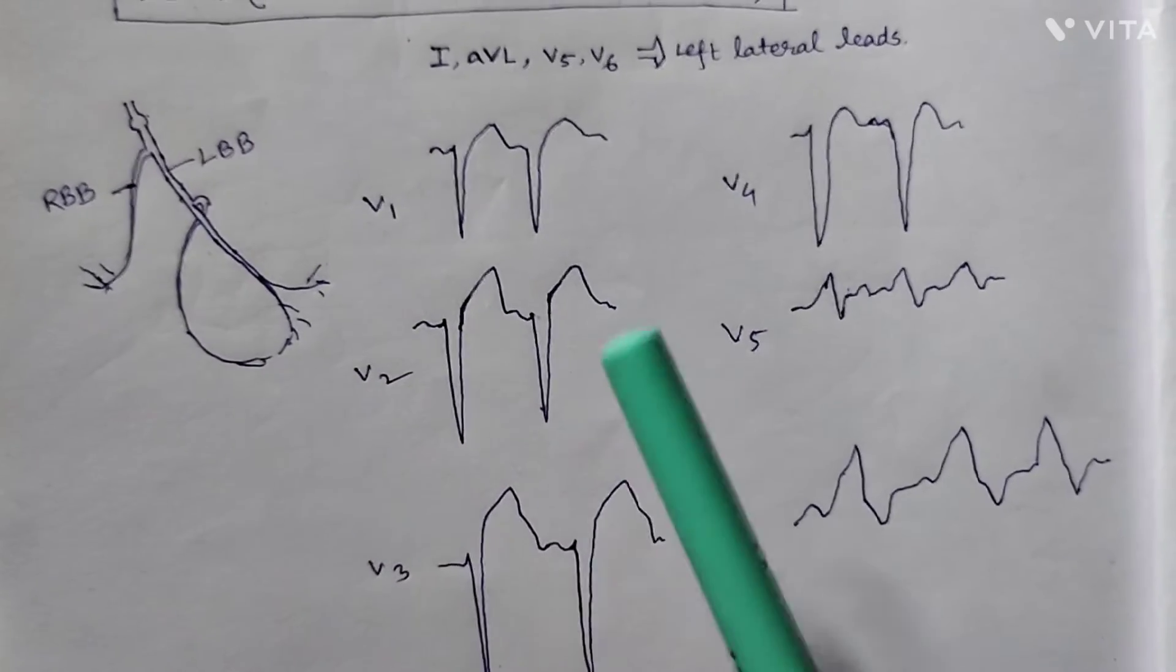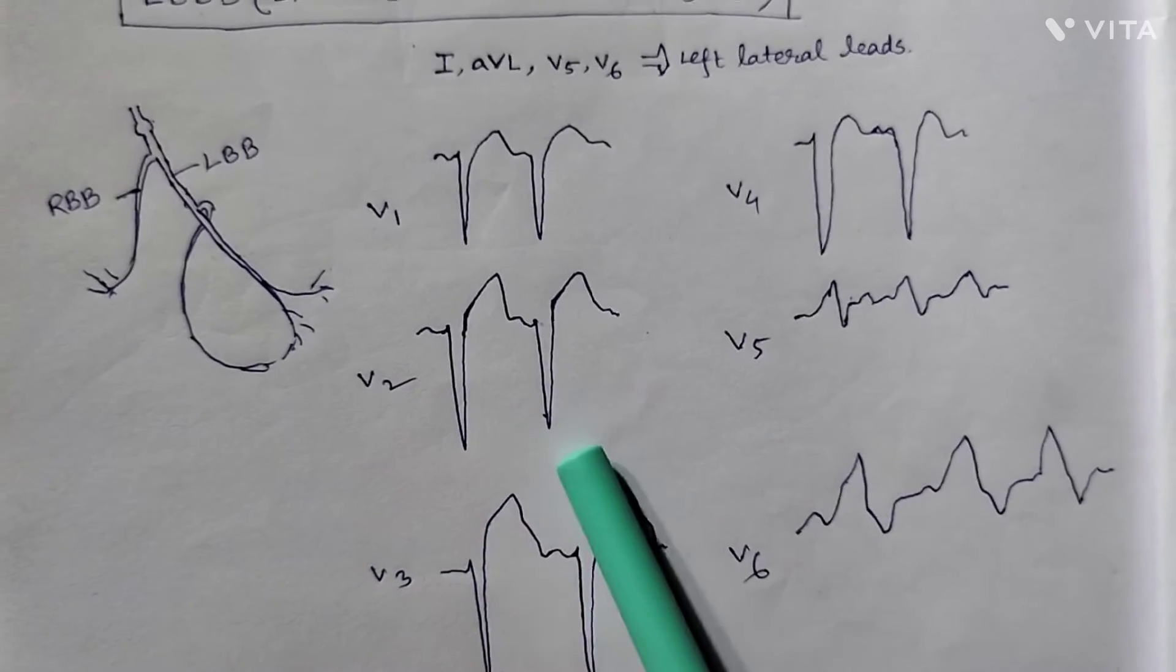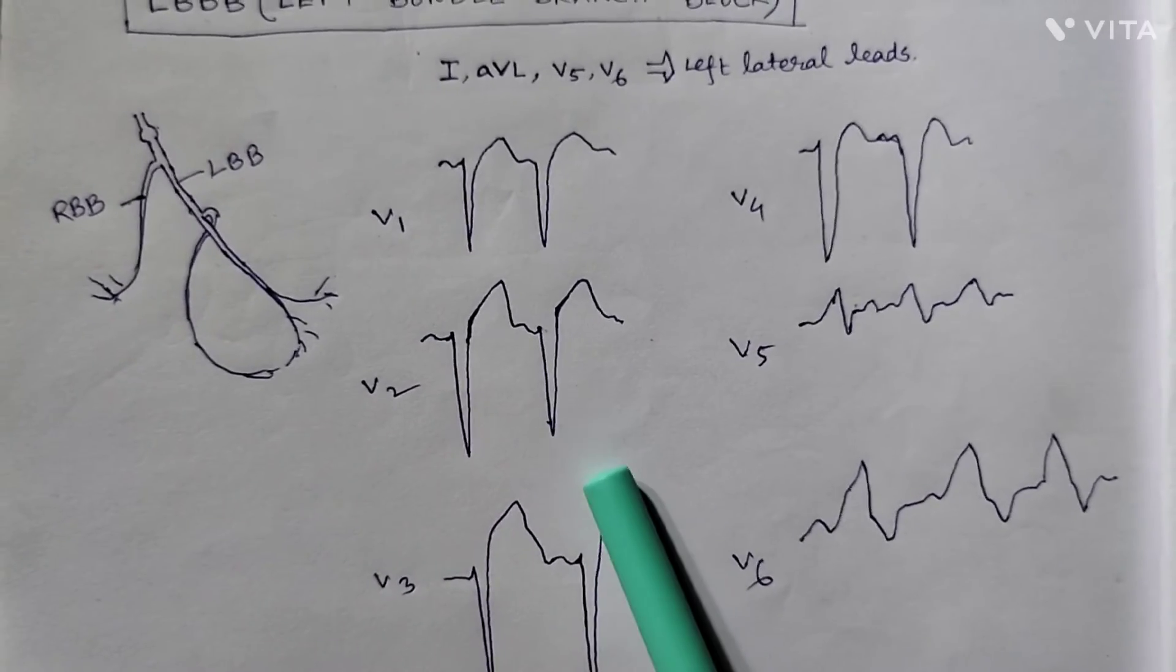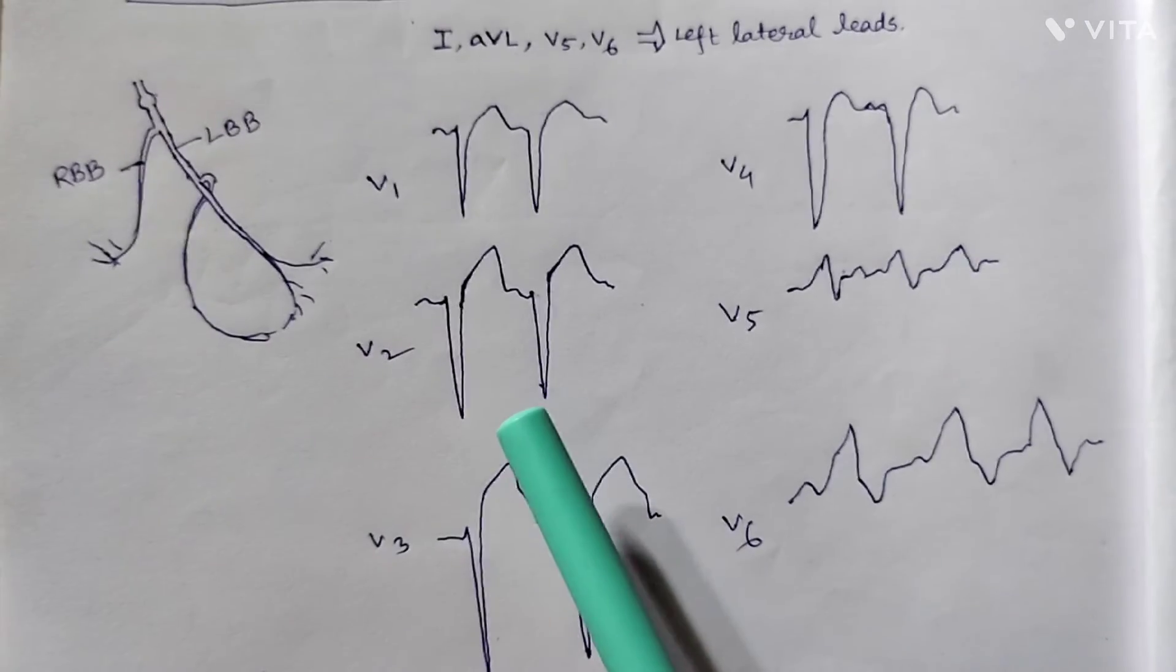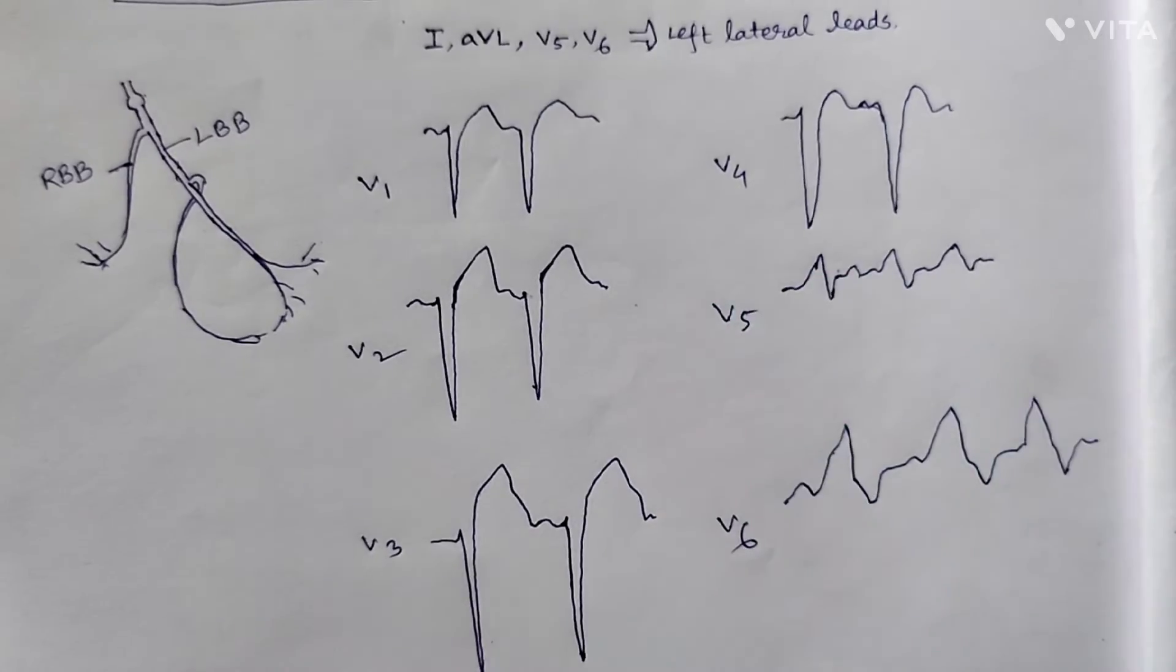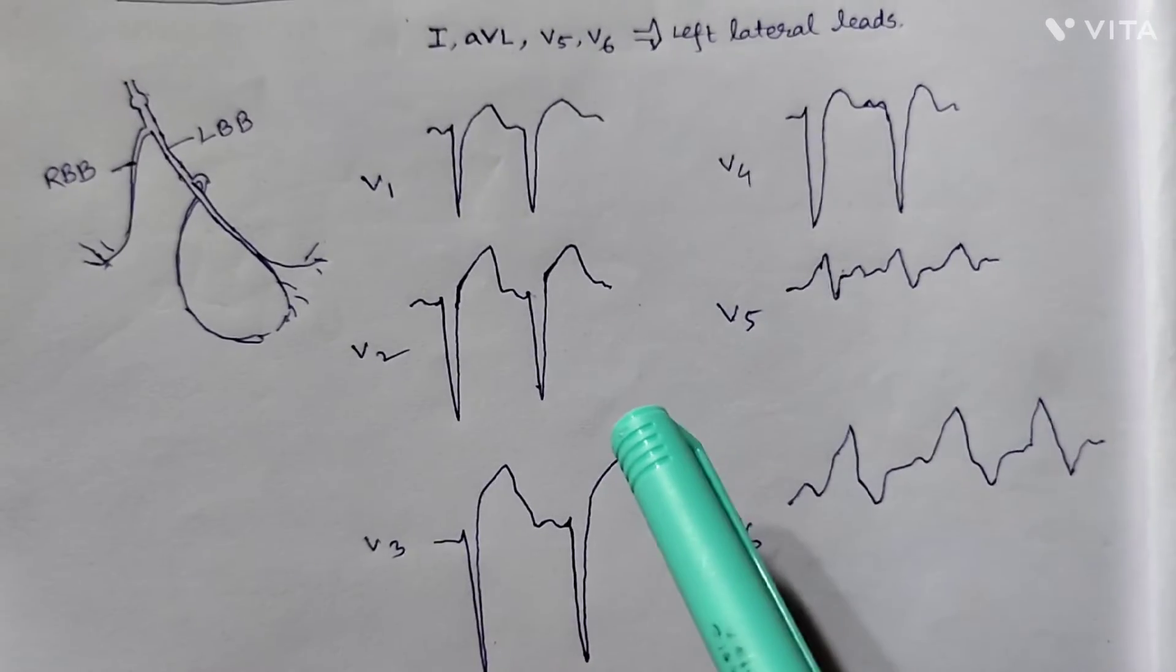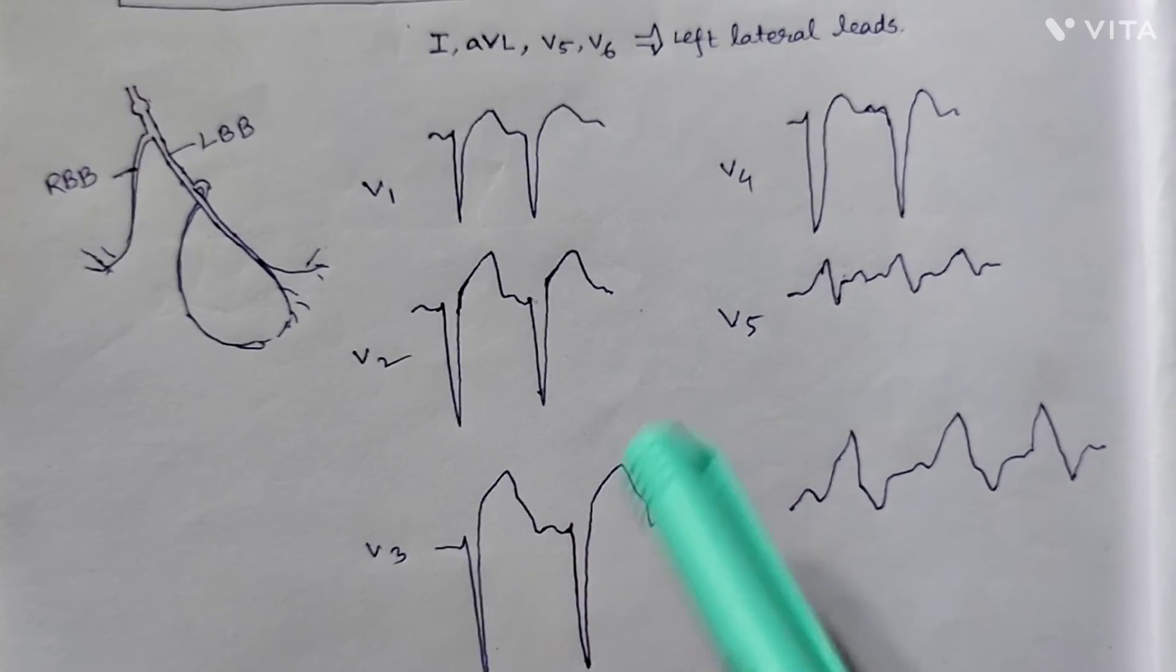Do not confuse that with STEMI, anterior wall STEMI. These are common findings in LBBB. If you want to differentiate true ST segment elevation from a normal LBBB pattern, you will have to look at the Sgarbossa criteria.